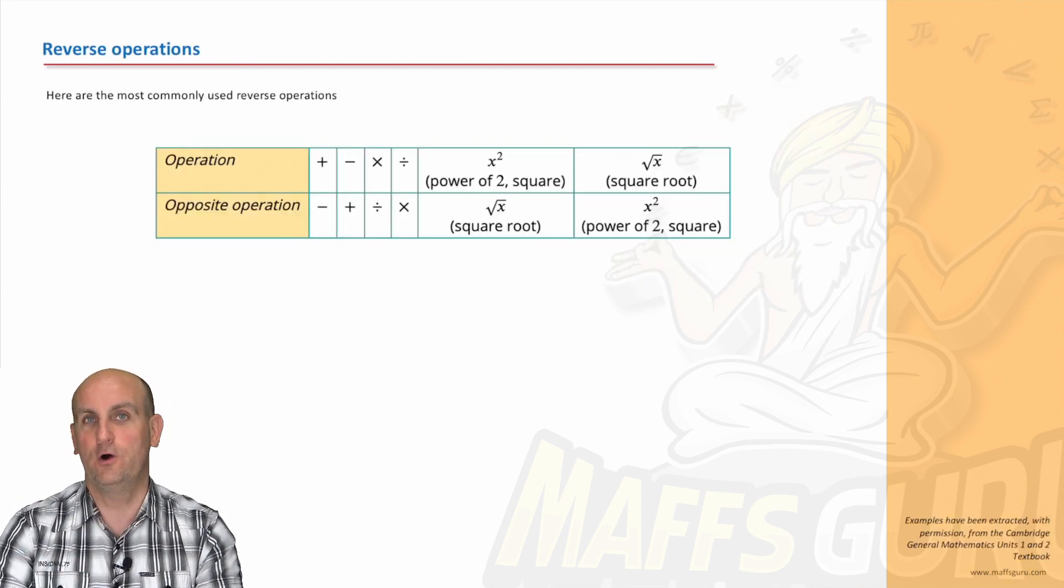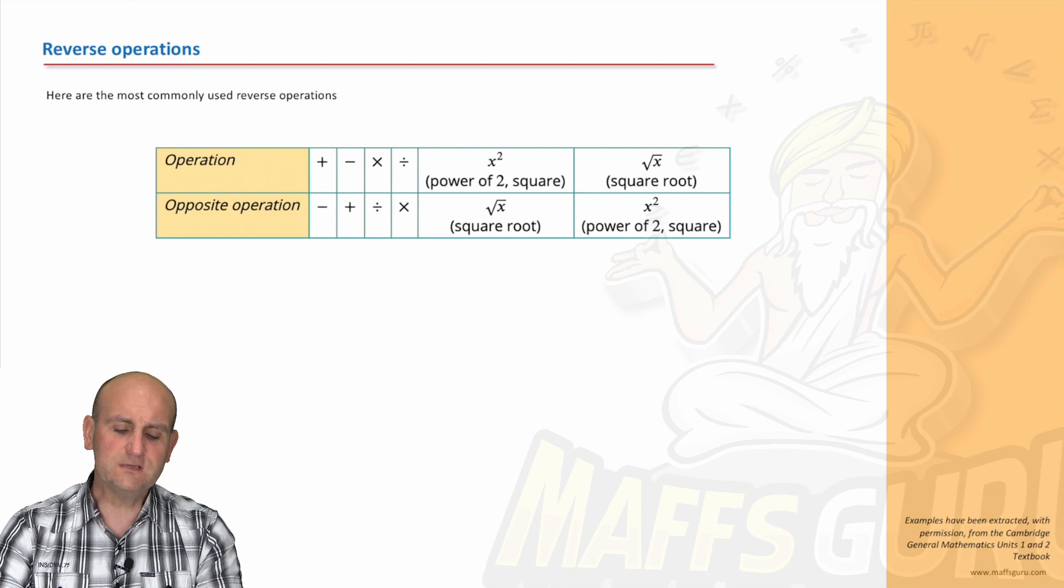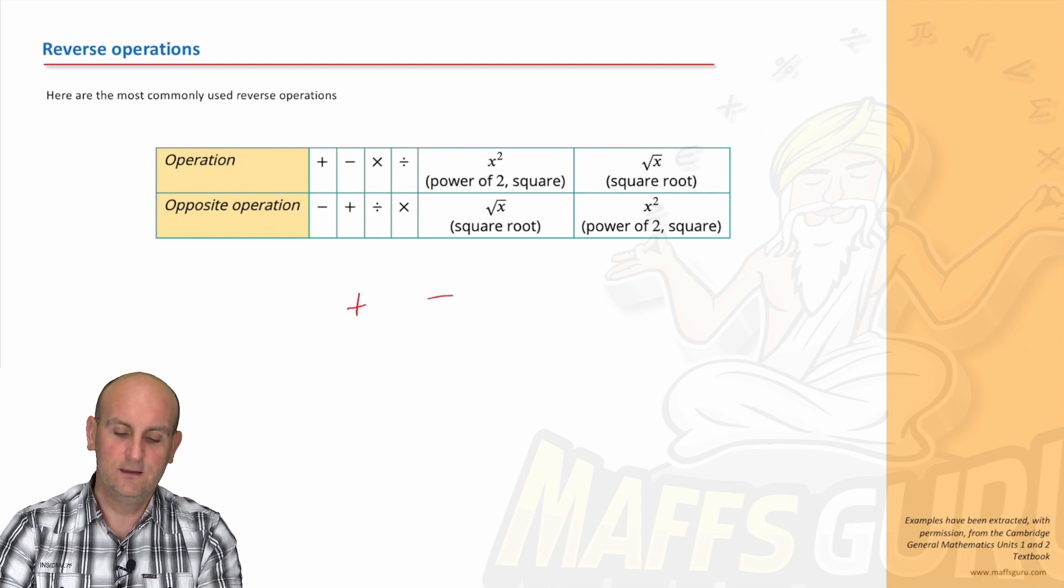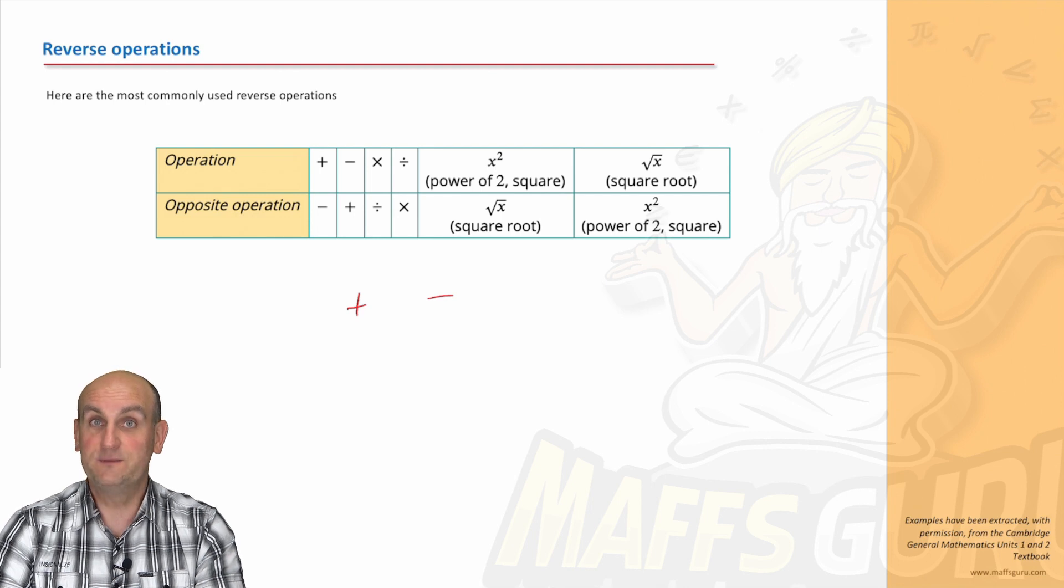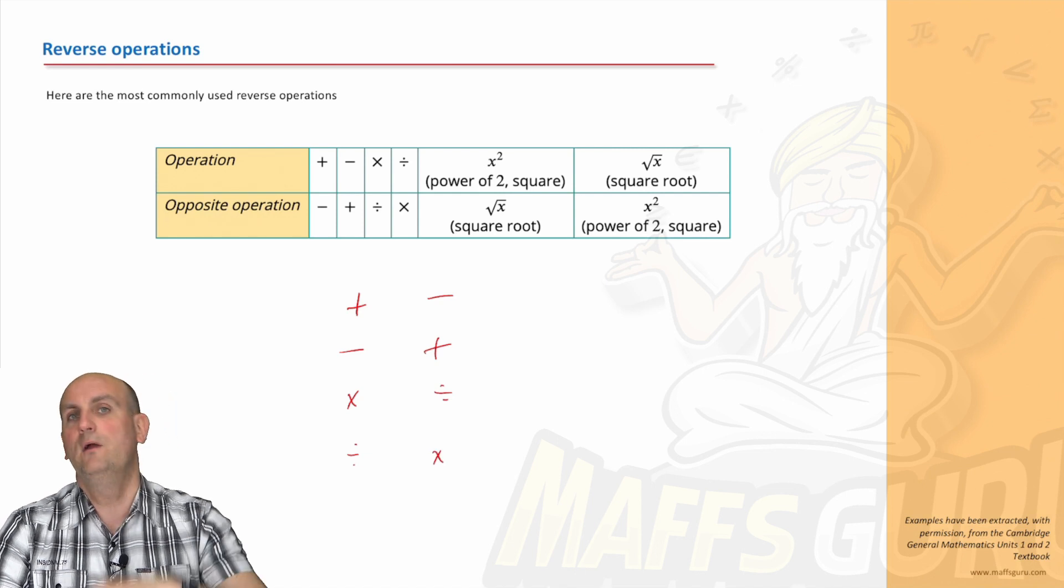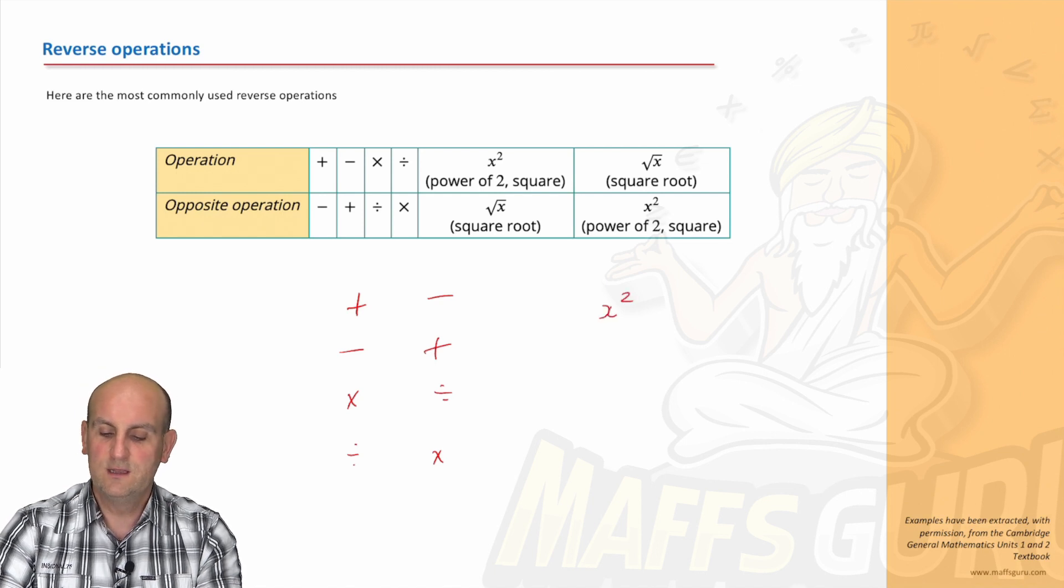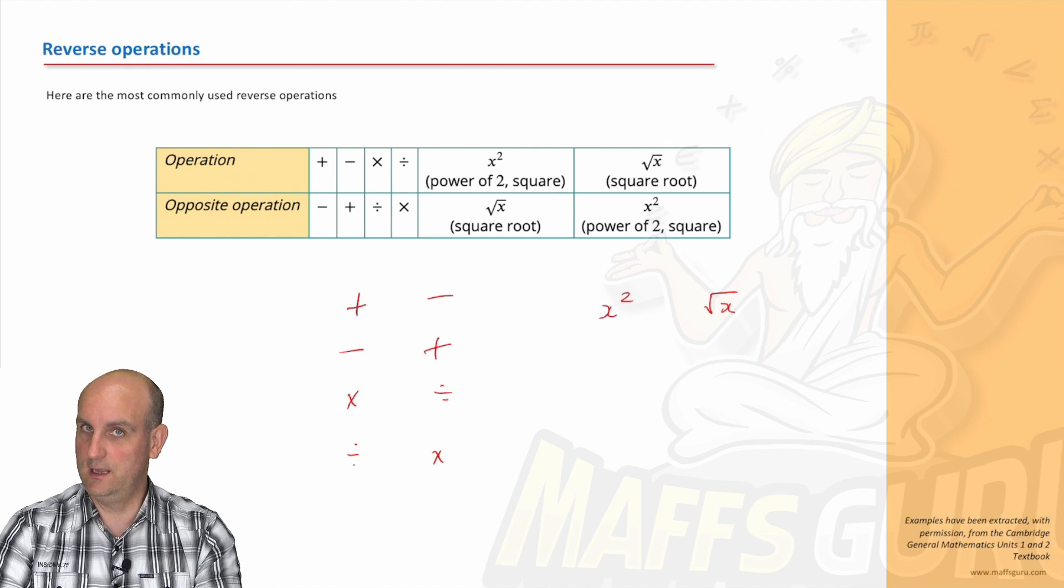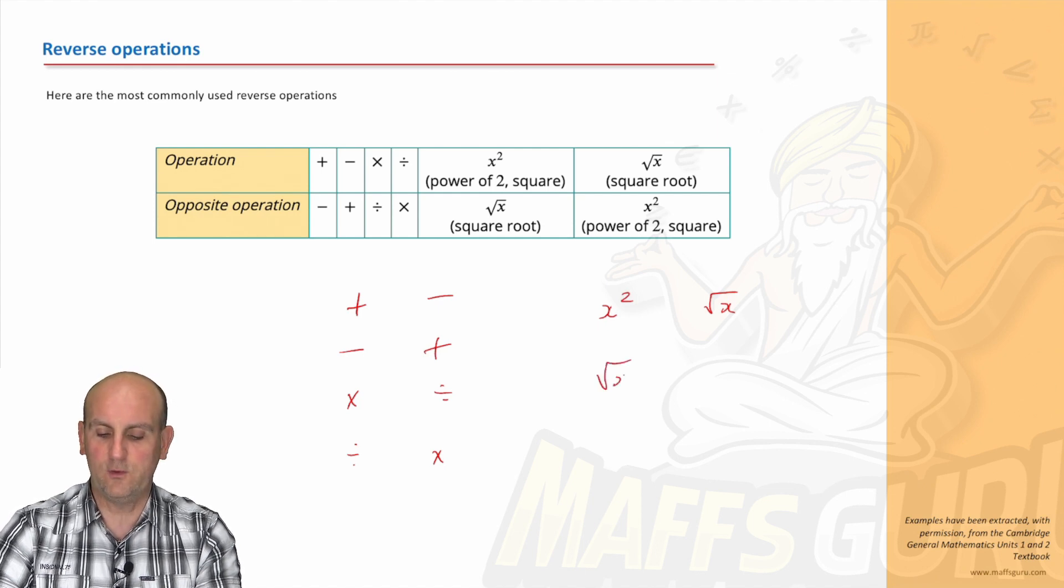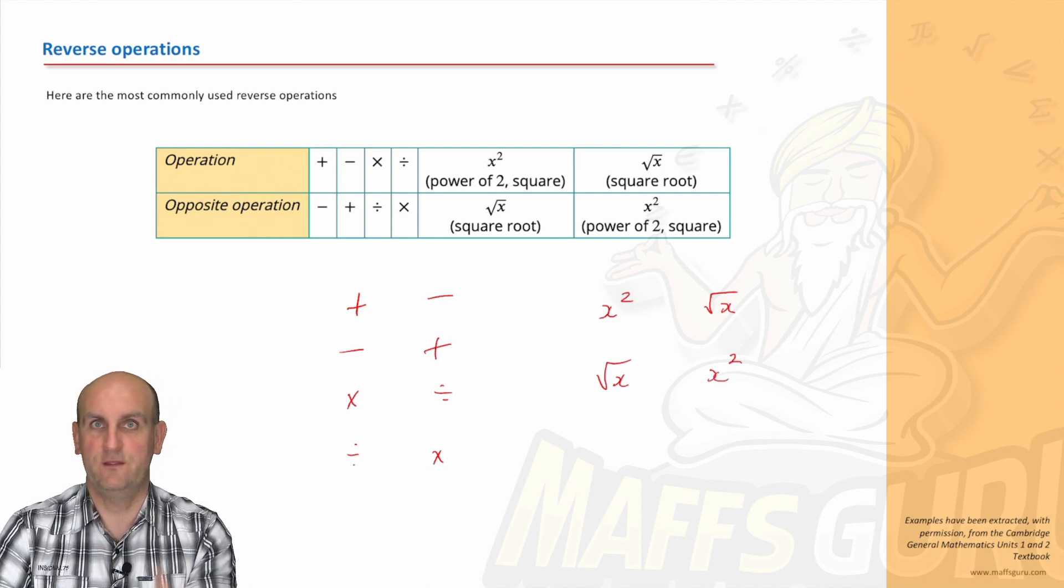What you do need to know about though is reverse operations. Now obviously what we should know is that if I have a plus, to reverse it I'm gonna take away because they are the opposites for each other. That's what I mean by reverse. If I have a minus, my opposite is a plus. A times, the opposite of times is divide, and the opposite of divide is times. Now the other two there we're gonna come to in another video, but it's useful to know that when you have a square, when you have a number with a floaty two, to undo it you do the square root. Likewise, the square root of x can be undone by squaring it, and I've got examples of that in another video.